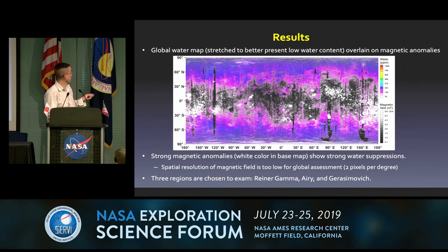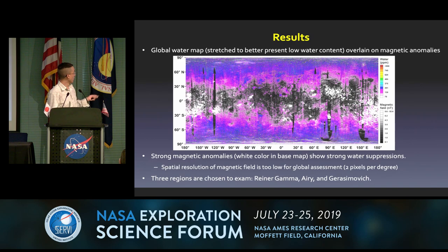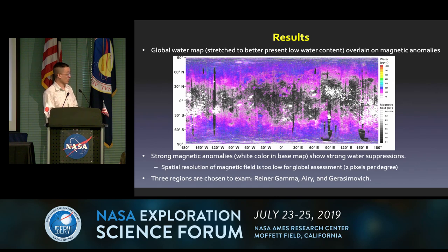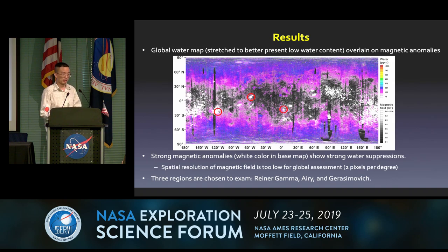Here is the global map, stretched to better present water at lower latitudes. You can still see many pixels with no color meaning no water content, overlaid on the magnetic anomalies map. The base map is black-and-white, where white color means a stronger magnetic field. The strong magnetic anomalies — the white pixels — show very strong water suppression. However, the spatial resolution of the magnetic data is very low, about two pixels per degree, making quantitative global comparison difficult. We picked three locations: Reiner Gamma, Gerasimovich, and Airy.